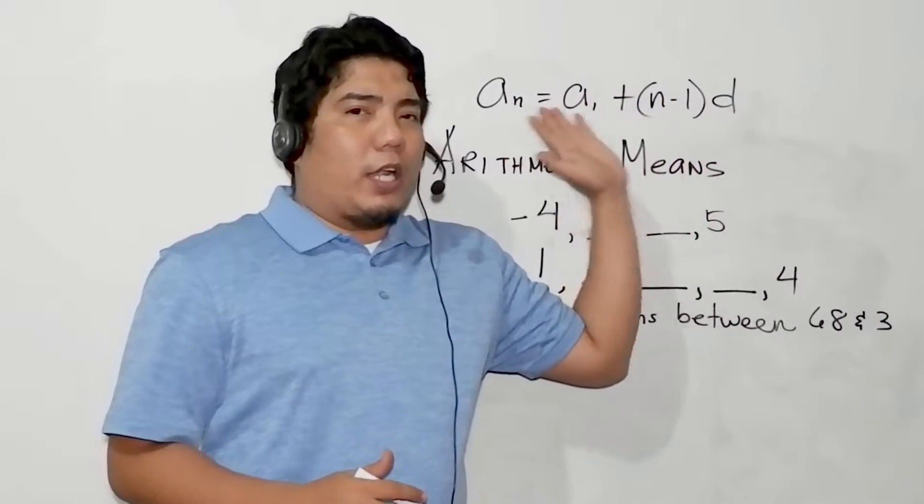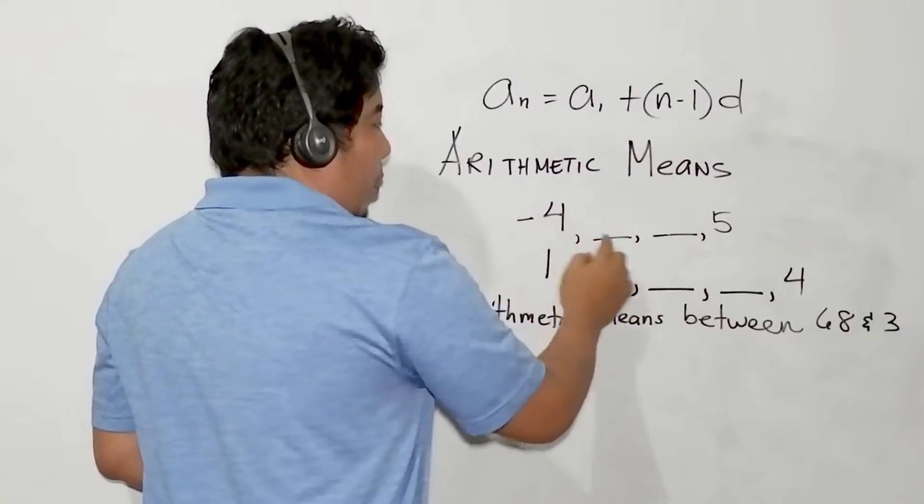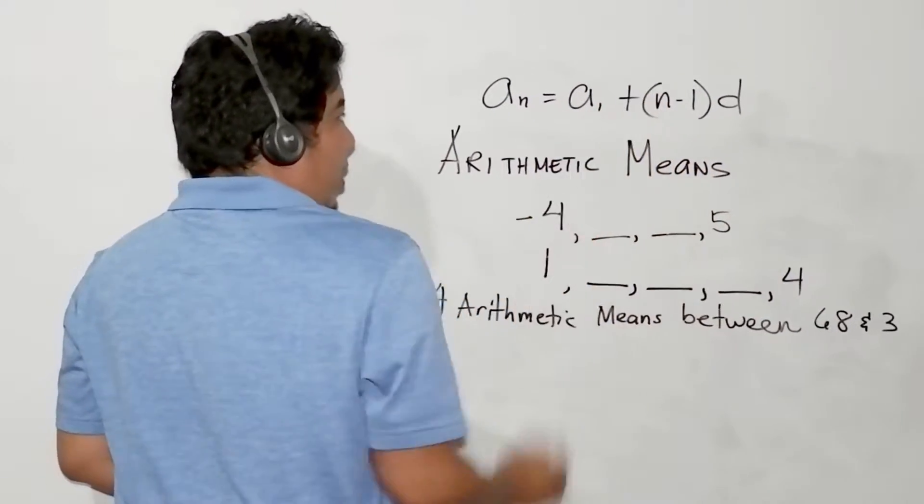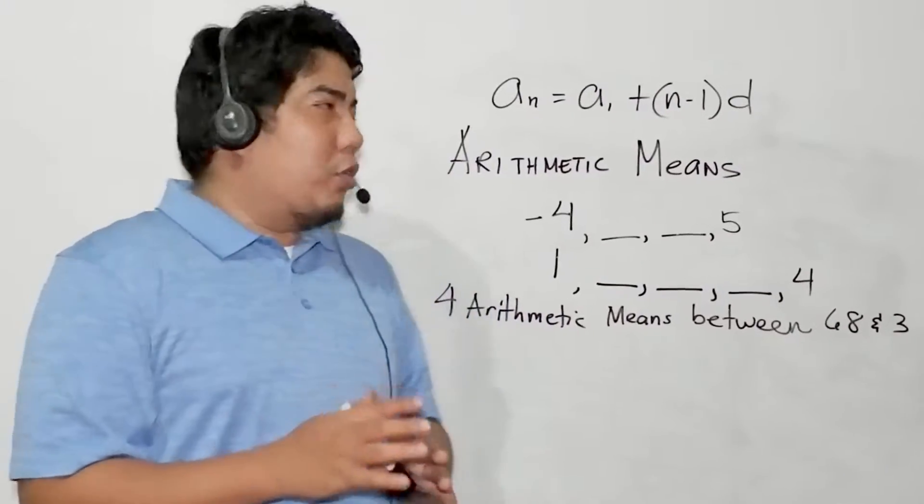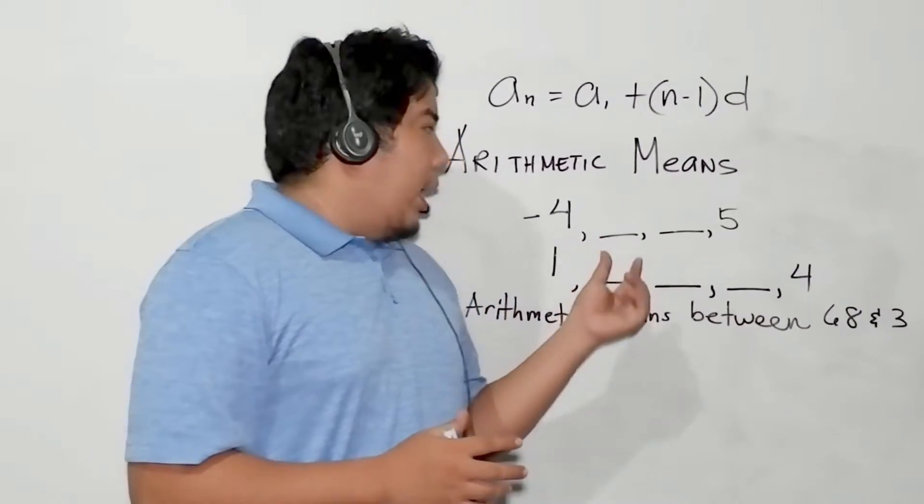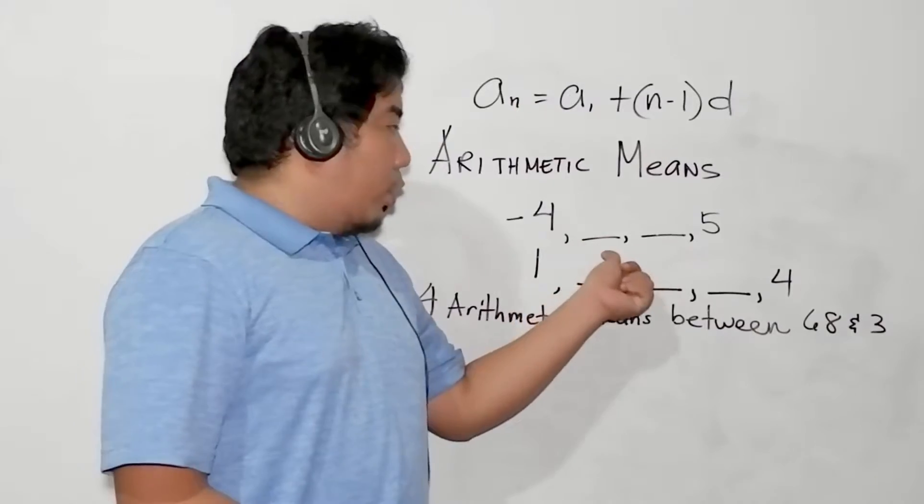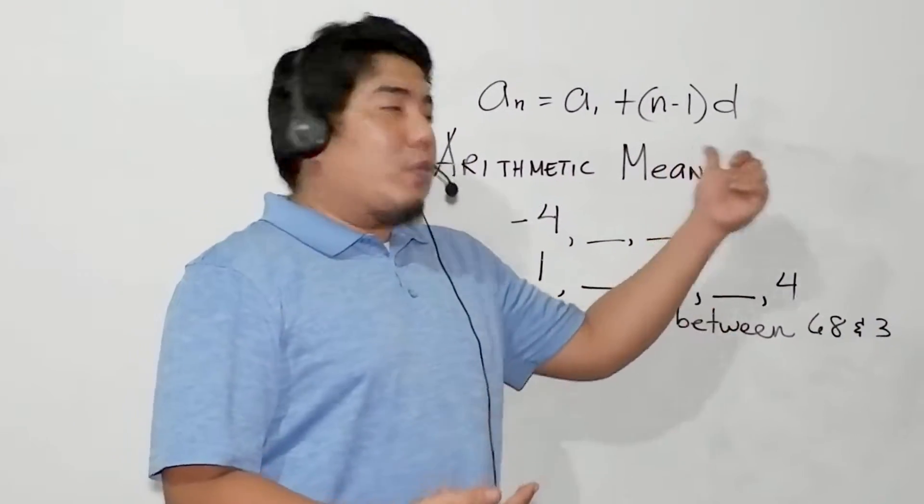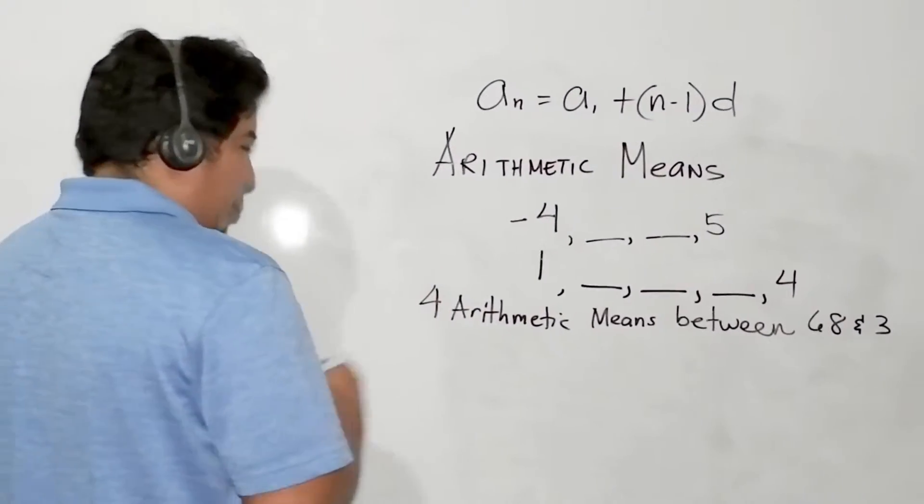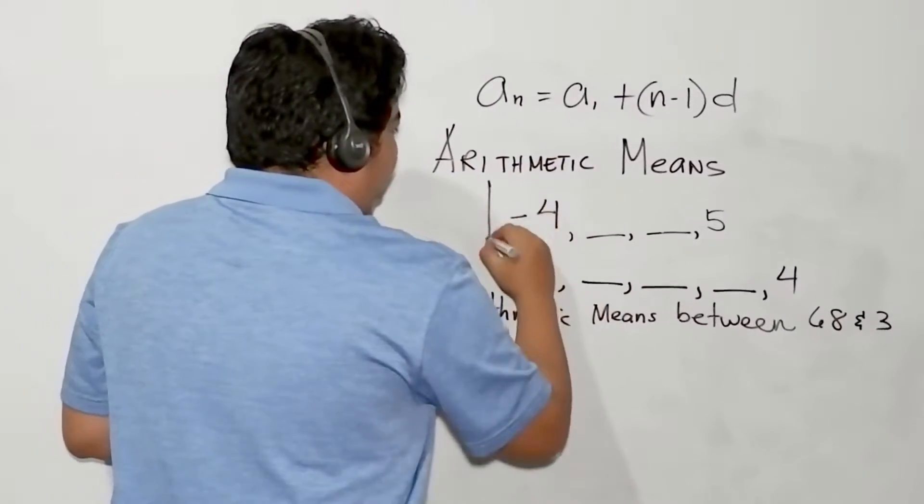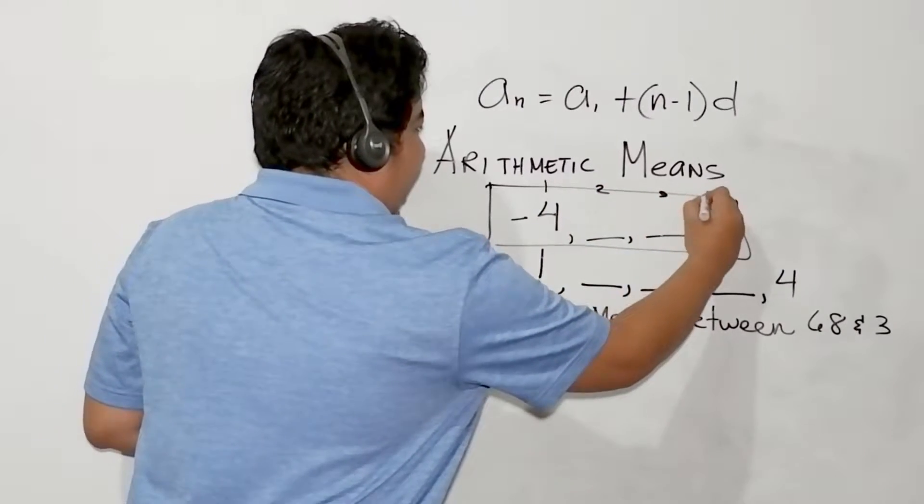Remember the parts of our given formula. This is the first term, yes, that is given. This is n. Now, we know that there are four. A sub n, this is the actual value. However, we don't know the difference. So first thing you should know is you need to get first the difference.